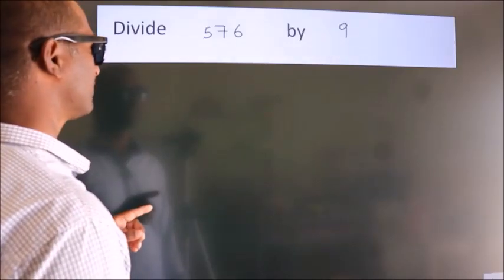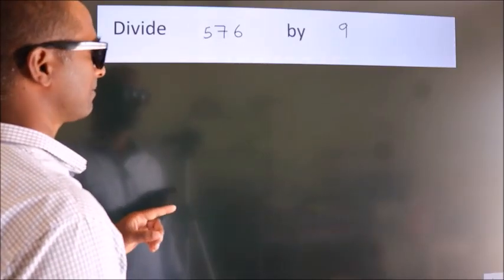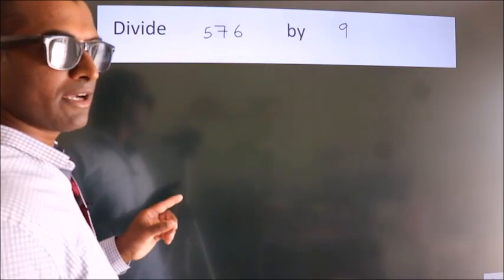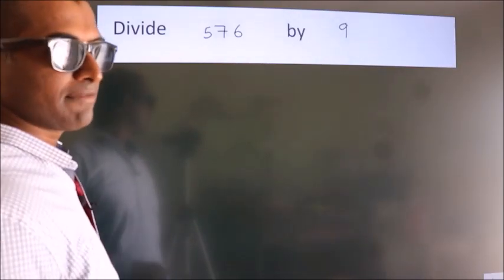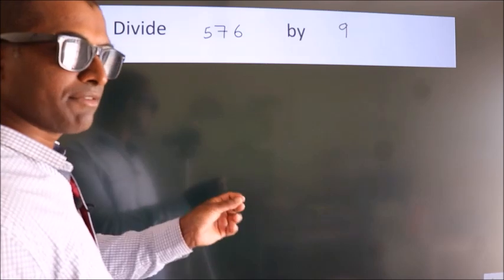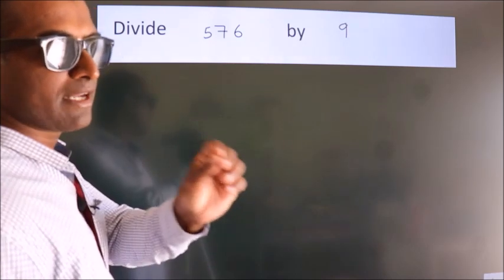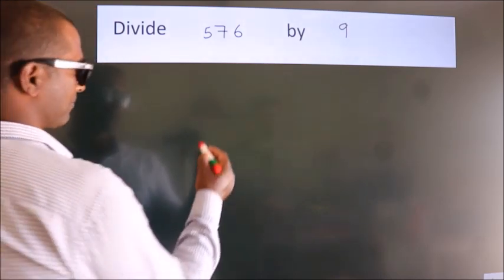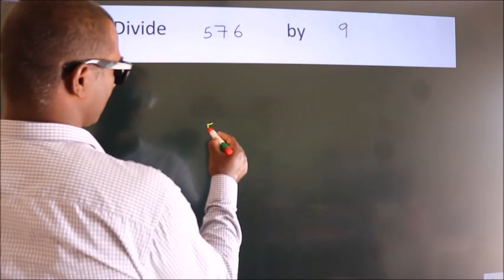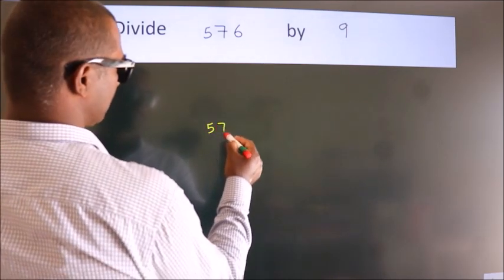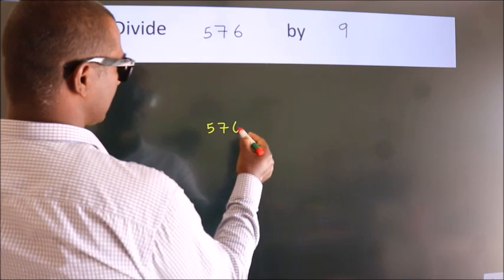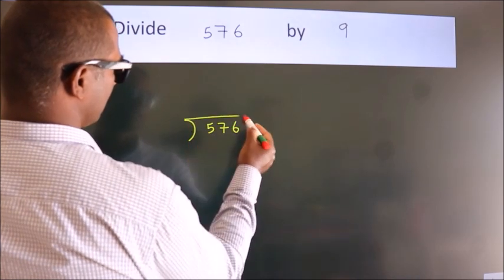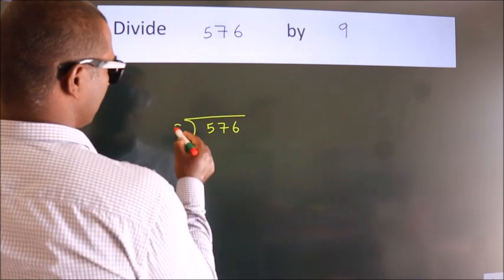Divide 576 by 9. To do this division, we should frame it in this way: 576 here, 9 here.